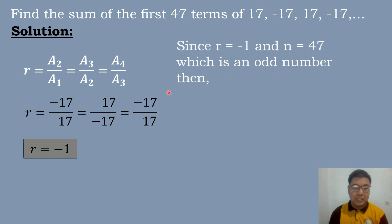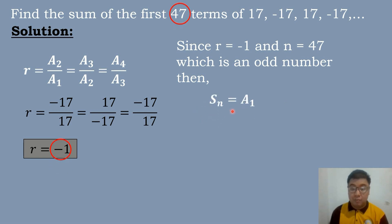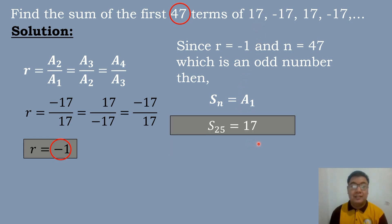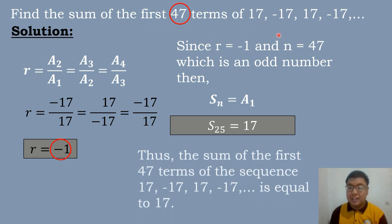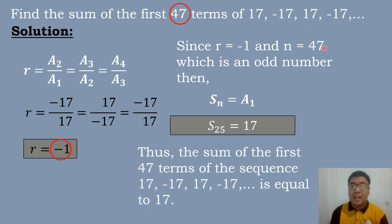Since R is equal to negative 1 and n equals 47, which is an odd number, we will use condition number 4. The formula for condition number 4 is S sub n equals the value of the first term. Our first term is 17. Therefore, the sum of the first 47 terms of 17, negative 17, 17, negative 17 is equal to 17.